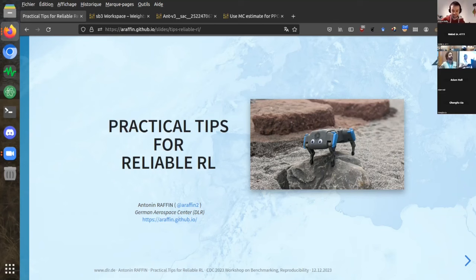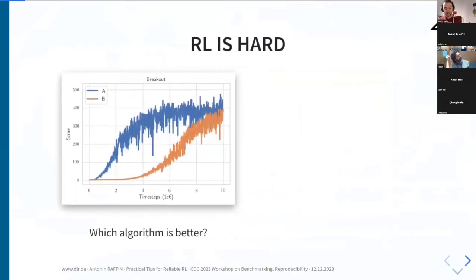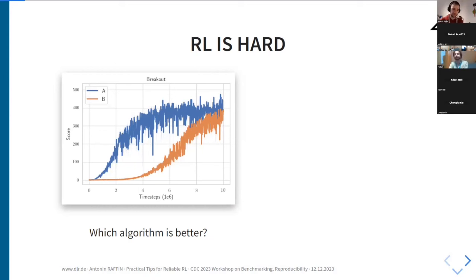Thank you very much for the introduction. My talk is going to be at the intersection between software engineering and reinforcement learning. Let's start with a bit of motivation. Reinforcement learning is hard. Let's say you're trying to compare algorithm A and B — here on the left you've run several experiments for 10 million time steps and you're comparing the performance, looking at the learning curve.